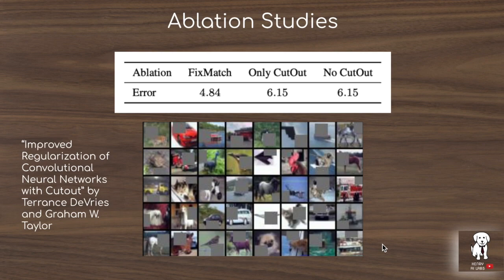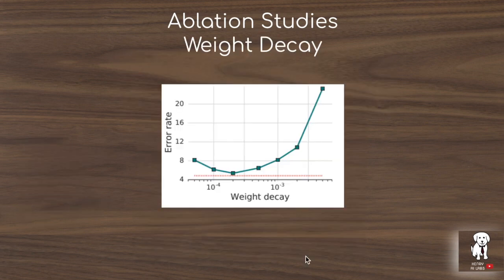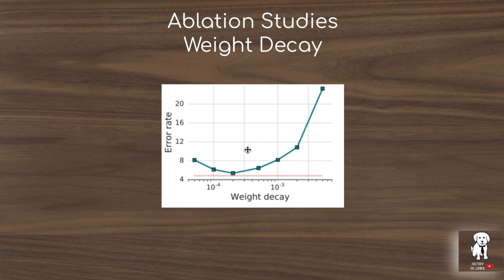Another interesting ablation study is the result of using cutout in the strongly augmented images. Cutout is like dropout in the data space — you randomly select a rectangle from the image and replace the pixels with random, zero, or 255 pixels. The lowest error rate of 4.84% is achieved by first passing the image through RAND augment or CT augment and then applying cutout, compared to only using cutout alone or not using cutout at all — both coincidentally achieving 6.15%. They also show a weight decay ablation — applying a regularization term to penalize large weights — showing a spike in error rate at the boundaries of the optimal weight decay scale between 10^-4 and 10^-3. Veering out to 10^-2 results in a much higher error rate, demonstrating how sensitive FixMatch is to hyperparameter tuning.